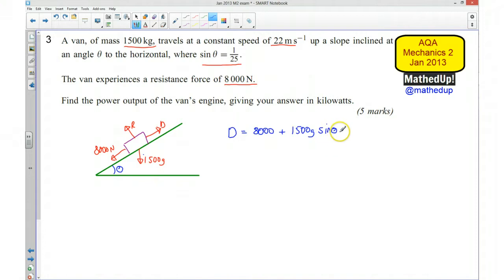I'm told that sine theta equals 1/25th, so my driving force equals 8000 plus 1500 times 9.8 times 1/25th. If I calculate that, I get a driving force equal to 8,588 newtons.